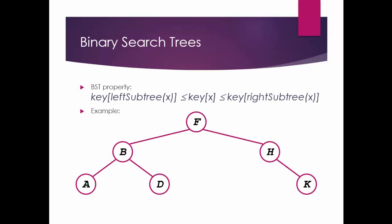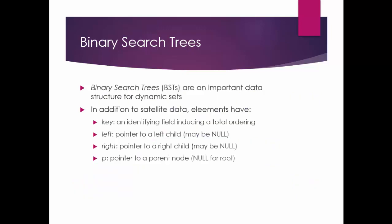Look at this example. In this, f is the root node and it has exactly two children. The child nodes are b and h. For f, it is b and h. Now b has two children: a and d, and h has two children which is k. Now a, d, and k are leaf nodes because they don't have any children. And b and h are intermediate nodes. So that is what a binary tree is.